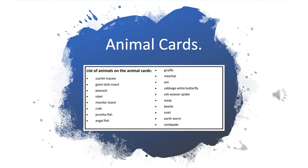These are the animals that you'll be trying to classify: scallop, macaw, giant stick insect, peacock, viper, monitor lizard, crab, piranha, angelfish, giraffe, meerkat, ant, cabbage white butterfly, orb weaver spider, wasp, beetle, snail, earthworm, and centipede.